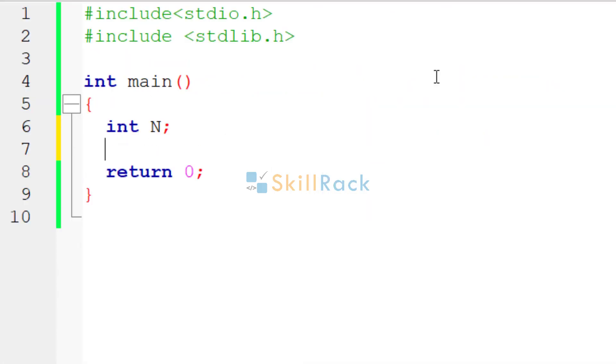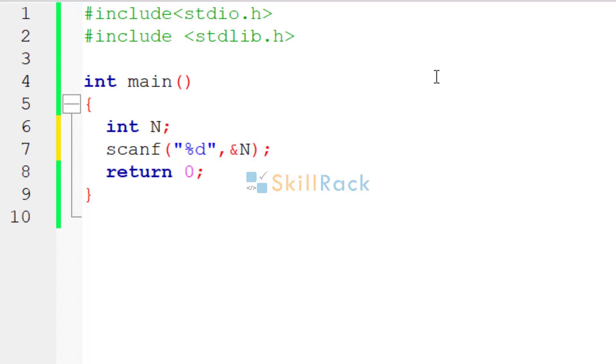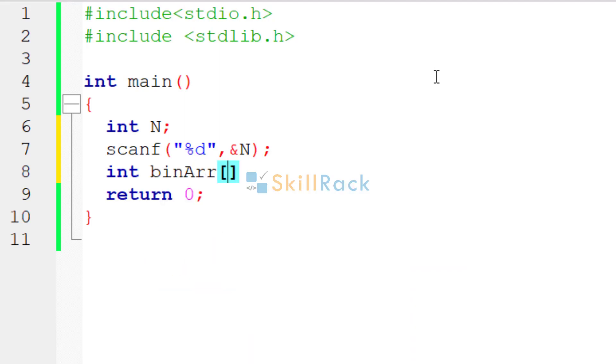First we are going to accept n as the input. Because the value is going to be till 2 power 31, integer is enough. Now we have to represent it in an array, the binary representation must be in an array. So let us call it binary array. What is the maximum size that is required? 32. So that index 31 will be there. And we can also have an index. So index equals minus 1, minus 1 indicates no values are stored.